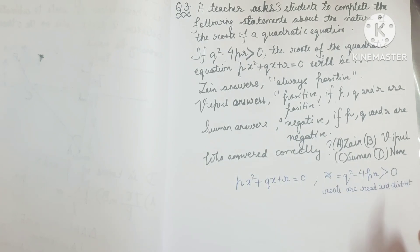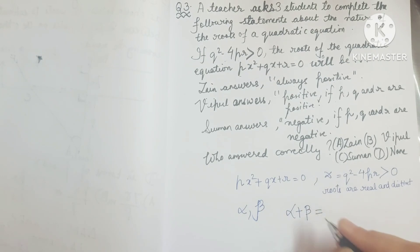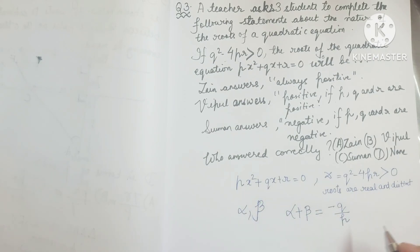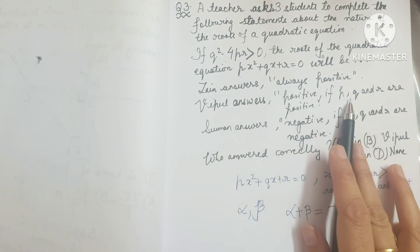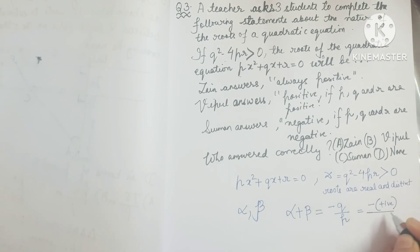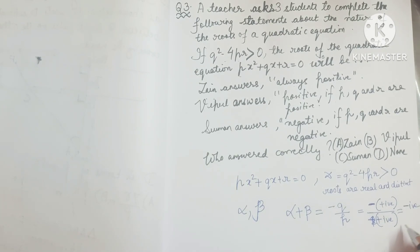Let's consider the roots alpha and beta. We know that alpha plus beta equals minus q by p. Now Zain's answer 'always positive' is very vague — he gave no conditions. For Whipple's answer, if p, q and r are positive, then minus q by p has a negative sign outside with positive over positive, so alpha plus beta would be a negative integer. So Whipple's answer that roots are positive is incorrect.